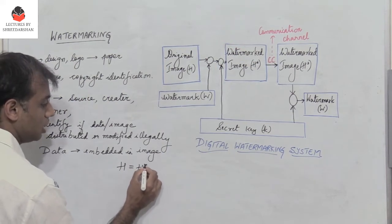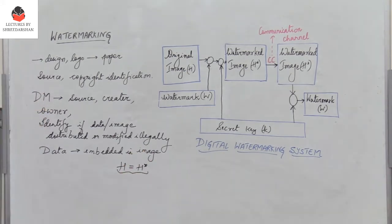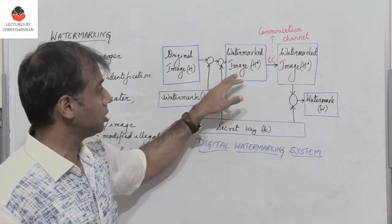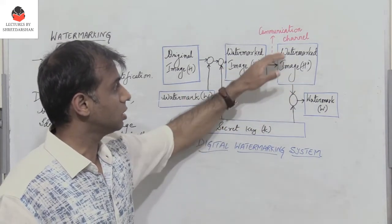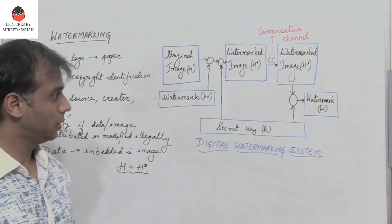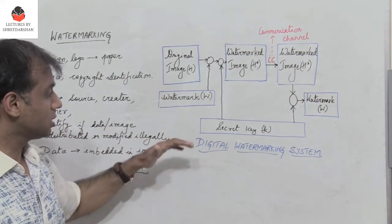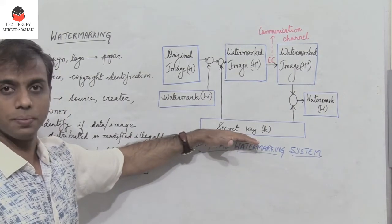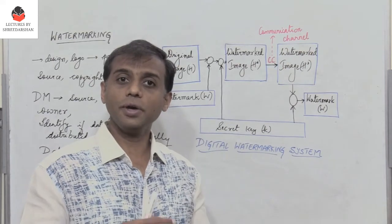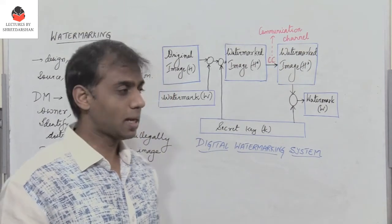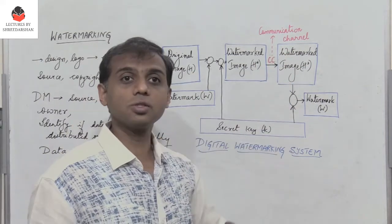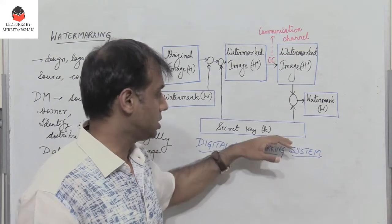To any general observer, the original image H and the watermark image look almost the same. The watermark image moves along the communication channel, and at the receiving end, the same secret key is used to extract the watermark from the watermark image.